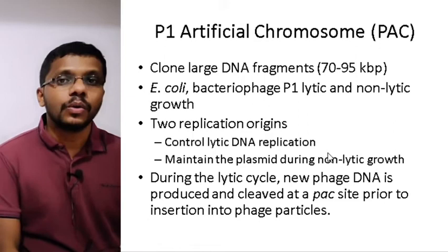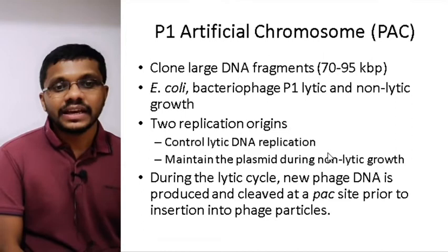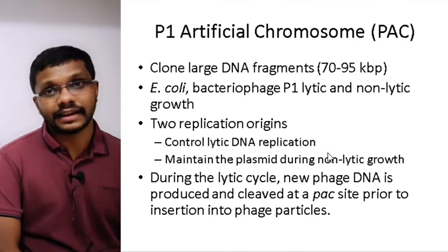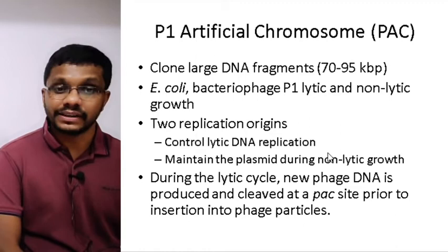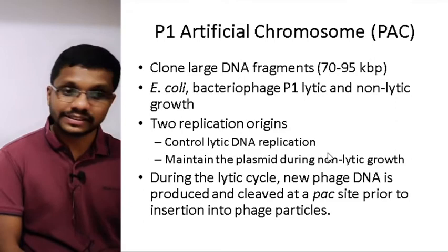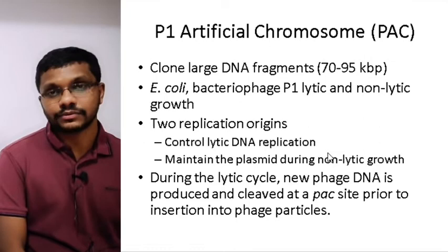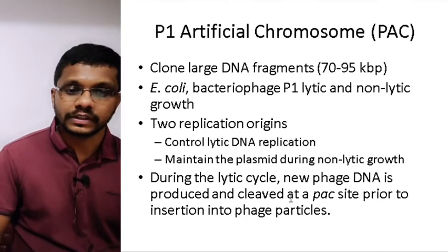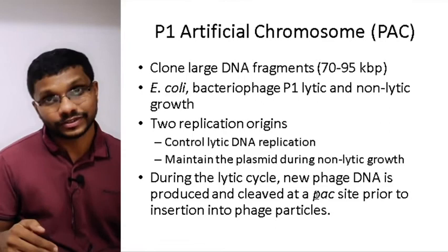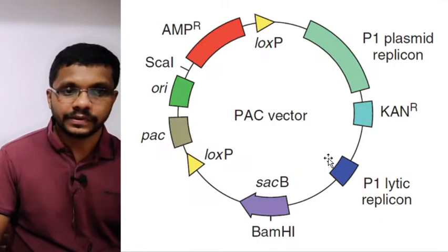One type of artificial chromosome used in E. coli is called the P1 artificial chromosome. Its carrying capacity is 70 to 95 kilobases, which is much higher than lambda phage vectors. It is derived from bacteriophage P1, which has both a lytic cycle and a lysogenic cycle, with two different regions of replication for lytic and non-lytic replication. It has a region called the PAC region, which is similar to the cos region of lambda vectors and helps with packaging into a functional phage.